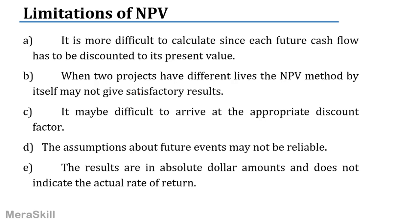What is the limitation of the NPV? It is more difficult to calculate because each future cash flow has to be discounted to its present value. When two projects have different lives, the NPV method by itself will not be satisfactory. The discount rate is somewhat arbitrary — choosing 10%, 12%, or 15% is slightly difficult. There is an element of subjectivity when arriving at the discount factor. Also, the results are in absolute dollar amounts and do not indicate the actual rate of return — I know whether NPV is positive or negative but I don't know the rate of return.